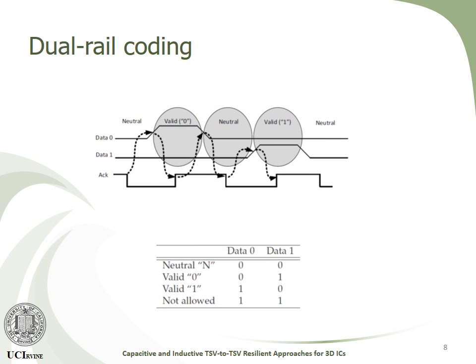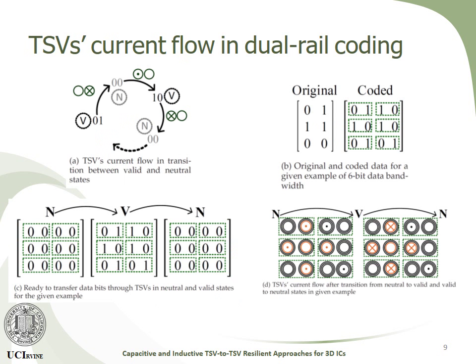As the main contribution of this article, a novel architecture is proposed to prevent the adverse coupling cases from occurring. This architecture uses dual rail coding to encode the information. With dual rail coding, out of each pair of victim and aggressor TSVs, one is always neutral or inactive, so in the case of four aggressors and one victim TSV, the coupling effect would never exceed 4C.